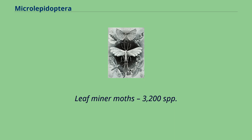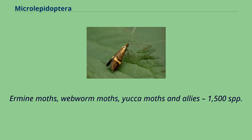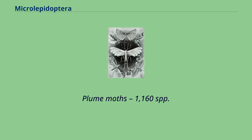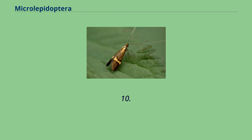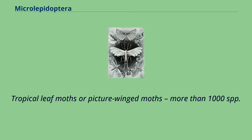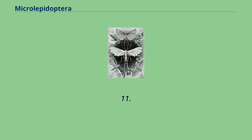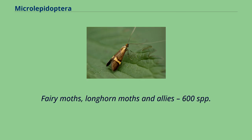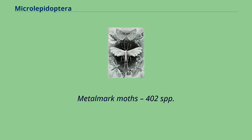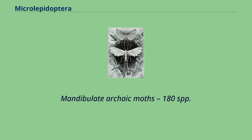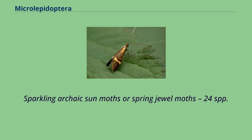6. Leaf miner moths — 3,200 spp. 7. Ermin moths, webworm moths, yucca moths and allies — 1,500 spp. 8–9. [unlisted] 10. Plume moths — 1,160 spp. 10. Tropical leaf moths or picture-winged moths — more than 1,000 spp. 11. Fairy moths, longhorn moths and allies — 600 spp. 12. Metalmark moths — 402 spp. 13. Mandibulate archaic moths — 180 spp. 14. Sparkling archaic sun moths or spring jewel moths — 24 spp.